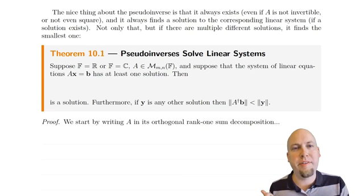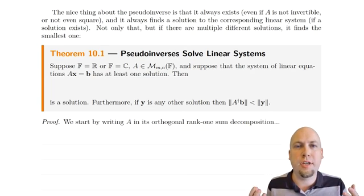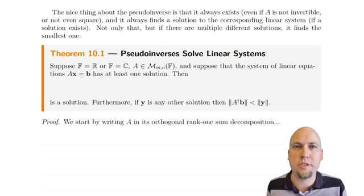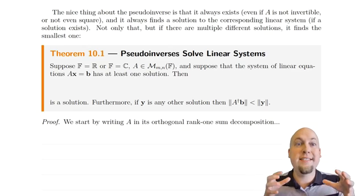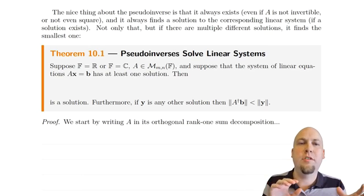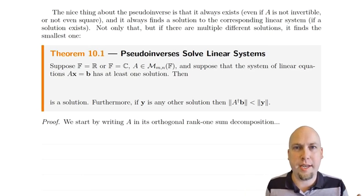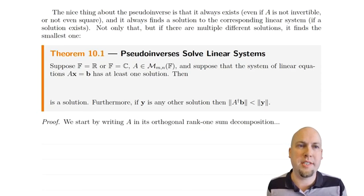Remember in the previous lecture, we talked about what the pseudo-inverse is. It's a matrix that you can construct out of the singular value decomposition of a matrix, and it generalizes the inverse of a matrix. If a matrix has an inverse, then the pseudo-inverse and the inverse are the same thing. But the pseudo-inverse has the advantage of existing for arbitrary matrices.